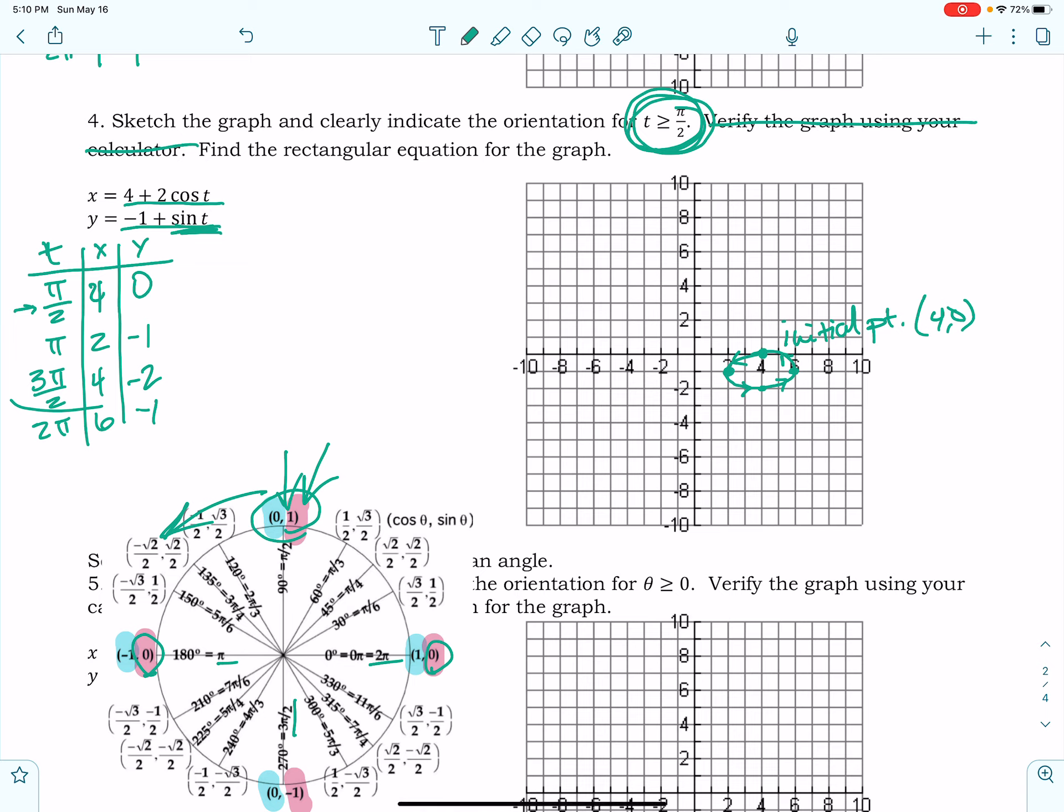Now I've got to write my rectangular equation. So I'm going to isolate cosine t. So that means x minus 4 divided by 2 equals cosine t. And y plus 1 equals sine t. And then we're going to use our identity again. Our identity value shows me that this is true. So I've got x minus 4 squared over 4, which is 2 squared, plus y plus 1 squared over 1. There you go. Easy peasy, lemon squeezy.